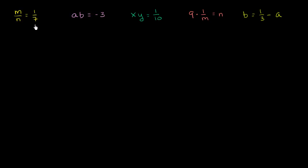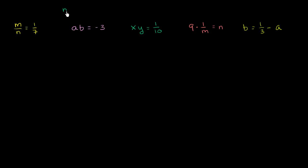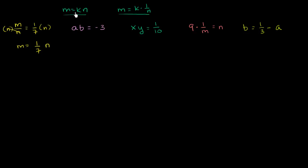Over here we have m over n is equal to 1/7. You want to separate them so that the two variables are on different sides of the equation. You can see if it's going to be the pattern m equals k times n — this would be direct variation — or m equals k times 1 over n, which is inverse variation. Multiplying both sides by n, we get m equals 1/7 times n. This meets the direct variation pattern — it's some constant times n — so this is direct variation.